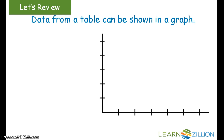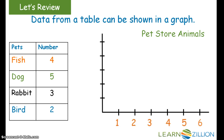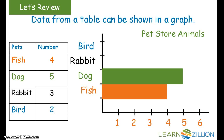Data from a table can be shown in a graph. Here the table is showing the number of pet store animals: fish, dog, rabbit, bird. On the horizontal axis we can label the number of animals, and on the vertical axis we can label the type of pets. And then we've learned how to insert the bars to match the information in the table.